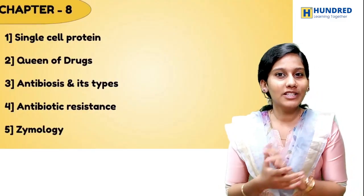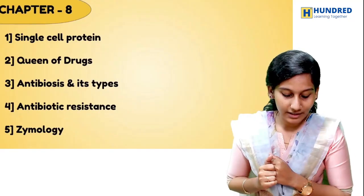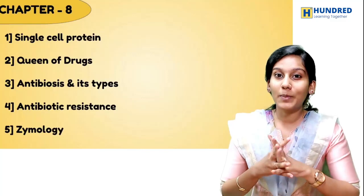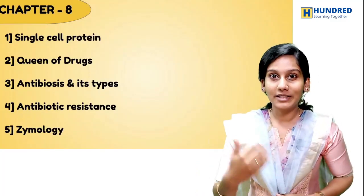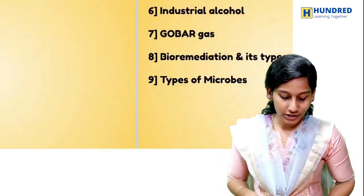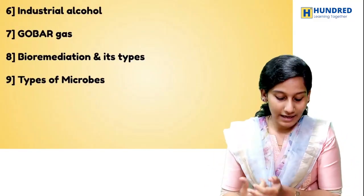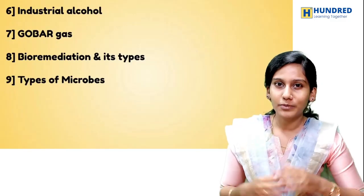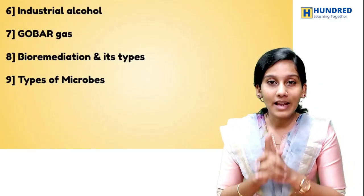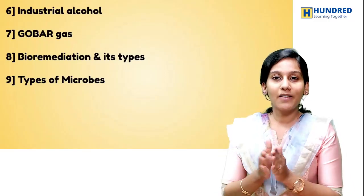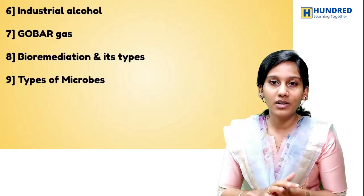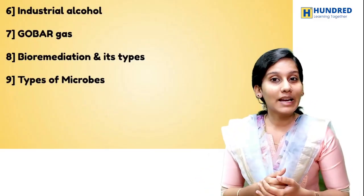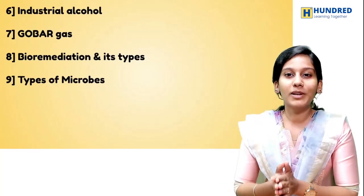Chapter 8 is a very easy chapter, maybe one mark or two marks. Single-celled protein is already covered in Botany. Queen of drugs: penicillin and Penicillium. Antibiosis and types of antibiotic resistance. Enzymology, industrial alcohol, biogas, and bioremediation — this is already covered in Botany so you don't have to worry. Also the types of microbes: aerobic and anaerobic. Prepare first, and mark any highlighted words in your book — those will be useful for one-mark or two-mark questions.